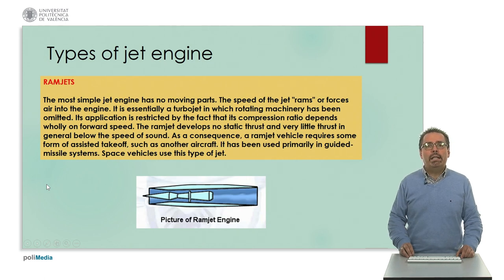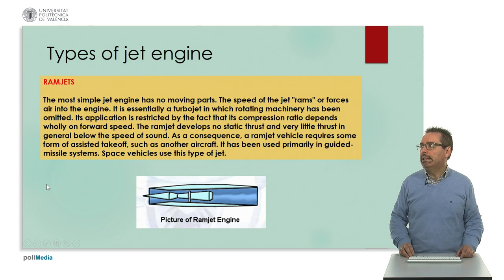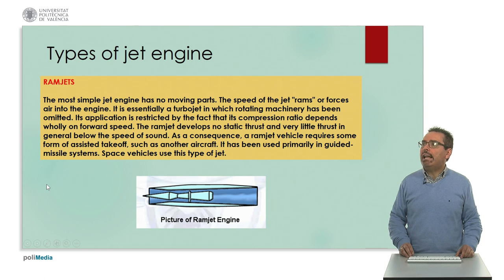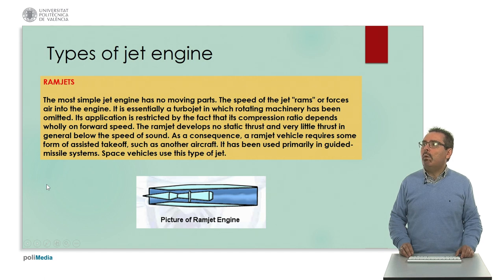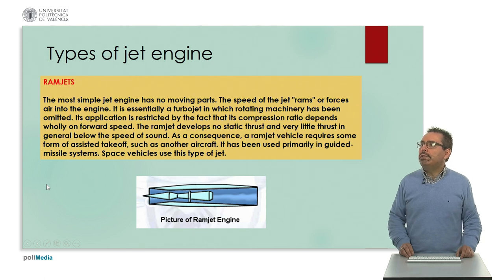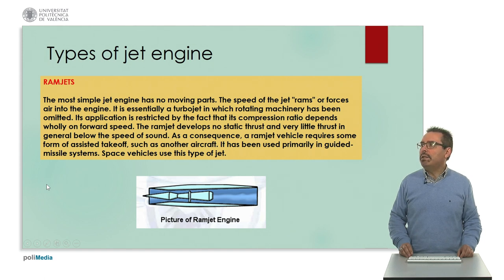The next type is called ramjets. This is the most simple type of jet engine and has no moving parts. The speed of the jet rams or forces air into the engine. It is basically a turbojet in which rotating machinery has been omitted or removed. Its application is restricted by the fact that its compression ratio is dependent wholly on forward speed. The ramjet develops no static thrust at all, and very little thrust in general below the speed of sound normally.